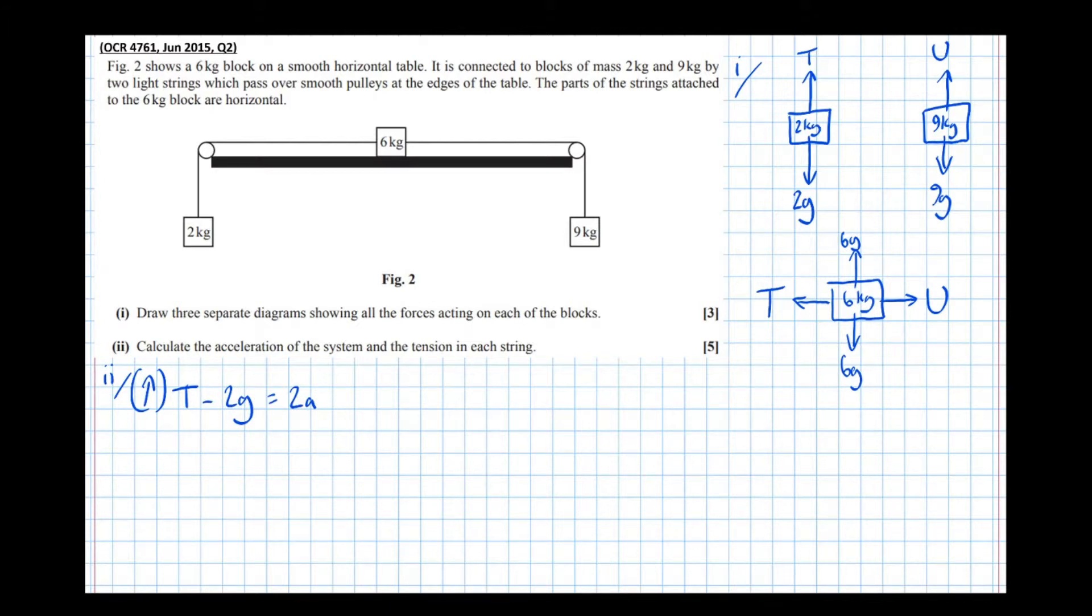And now for the six kilogram block which is going to be moving to the right. So we'll take right to be our positive direction. We get U take T equals mass times acceleration. And then finally for the nine kilogram block which is going to be moving downwards, we get 9g take U equals mass times acceleration.